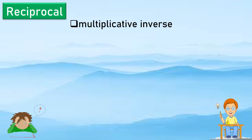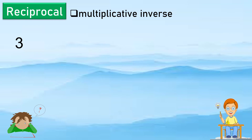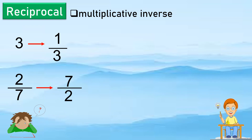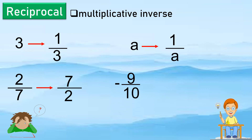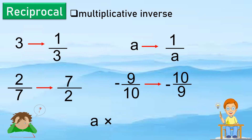The reciprocal is also called the multiplicative inverse. For example, the reciprocal of 3 is 1 over 3; the reciprocal of 2 over 7 is 7 over 2 — you just flip it. The reciprocal of a is 1 over a, and the reciprocal of negative 9 over 10 is negative 10 over 9. Multiplying a number by its reciprocal always equals 1.